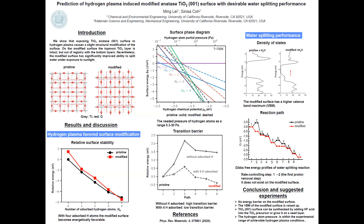As we know, anatase titanium dioxide is a promising and well-studied material for the catalysis of water splitting. Due to its large band gap, the titanium dioxide cannot use sunlight efficiently, so we should find a way to reduce the band gap.